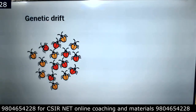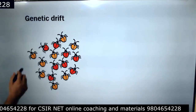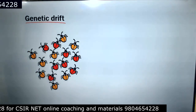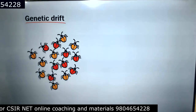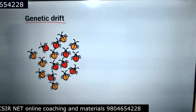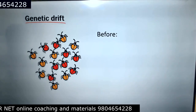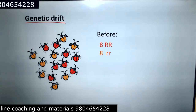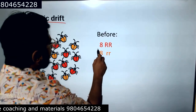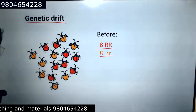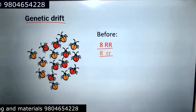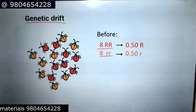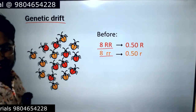Here is an example of how genetic drift works. We have a population of beetles where red and yellow beetles are almost 50-50. The frequency for capital R (red) and small r (yellow) — there are 8 red and 8 yellow, totaling 16 beetles. So the ratio, the frequency, is 0.5 for red and 0.5 for yellow.